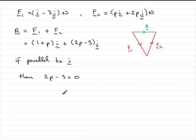And from this equation, we can work out what p is. All we need to do is add 3 to both sides and divide by 2. So p equals 3 over 2.